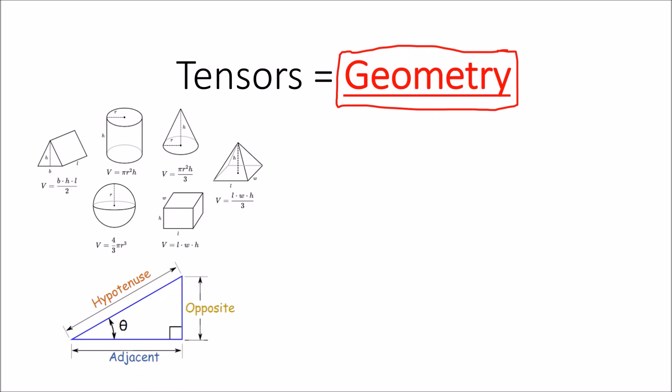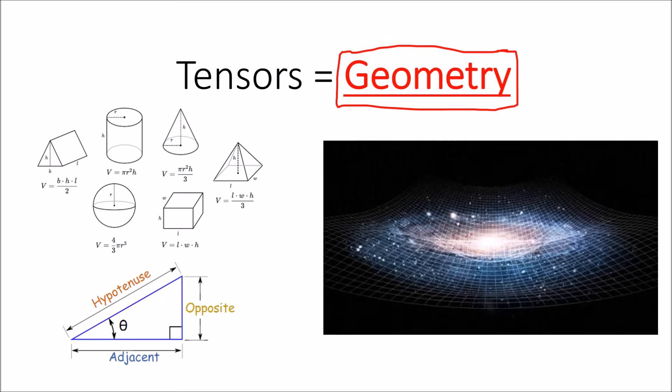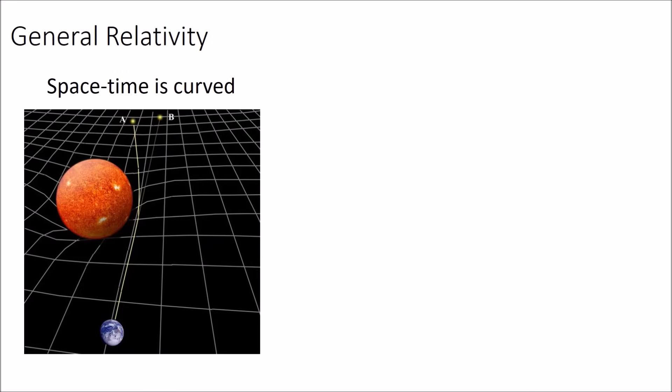So one example of such geometry is the geometry of space-time in Einstein's general relativity. If you've ever read or watched any popular science articles or videos on general relativity, you've probably heard about how space-time is curved and how light can travel in a curved path around massive bodies like stars and black holes.